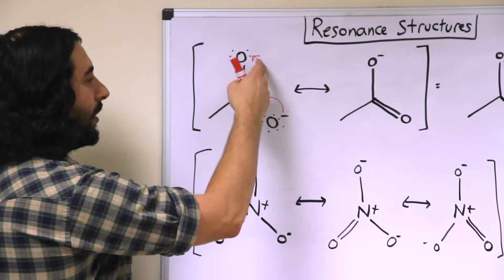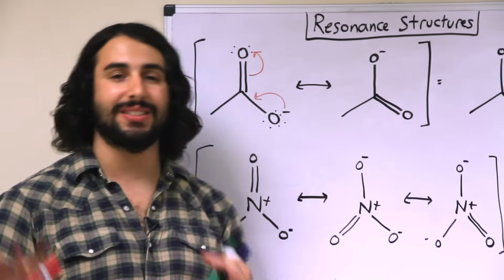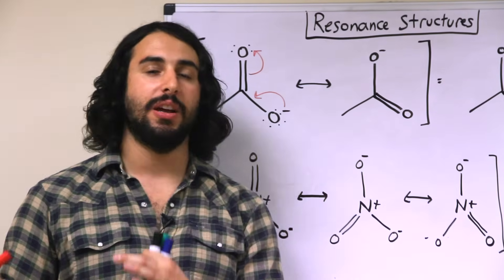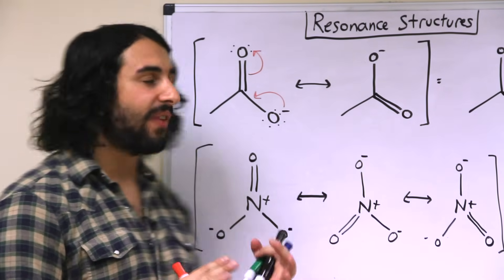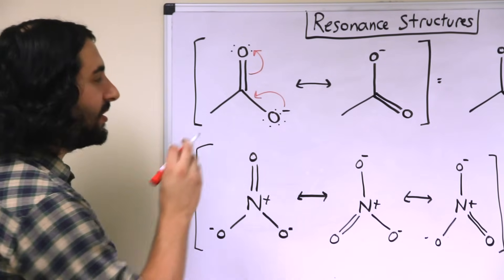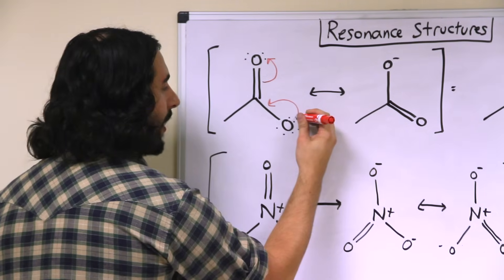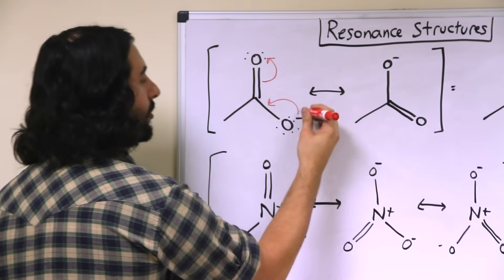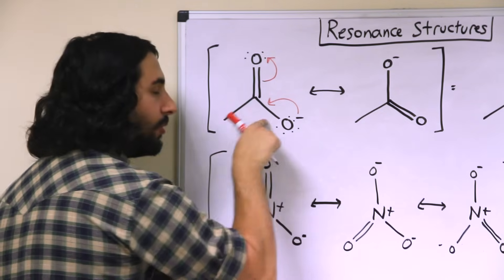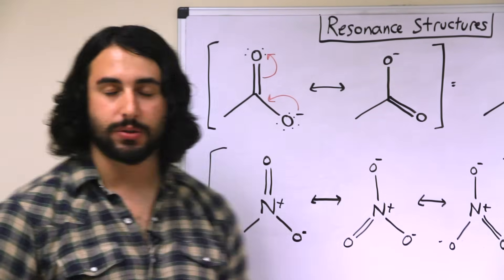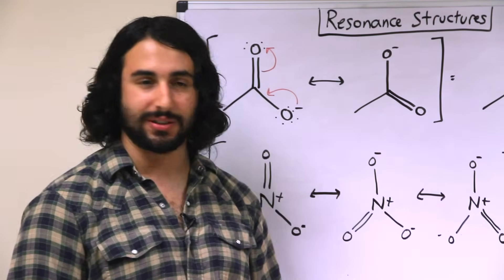With regards to these electron pushing arrows — those are something we're going to see a lot more later with mechanism stuff — these are very important to be drawn in a very particular way. This must go from electron rich to electron poor; in other words, from the lone pair to the bond itself. We'll get much deeper into those arrows later.